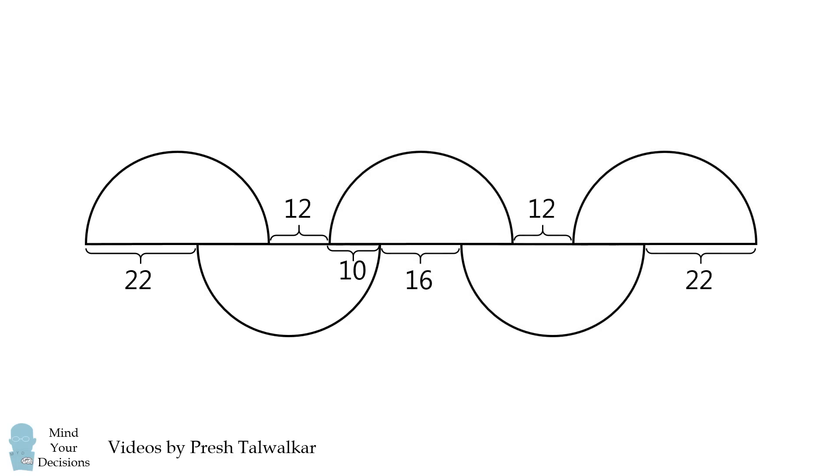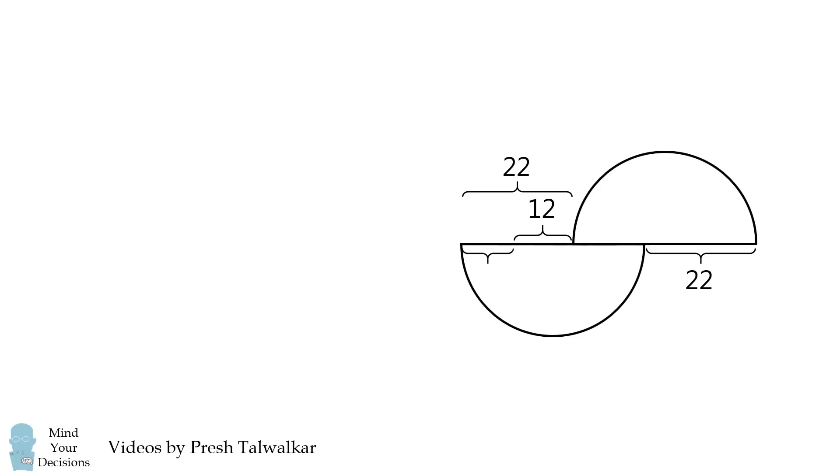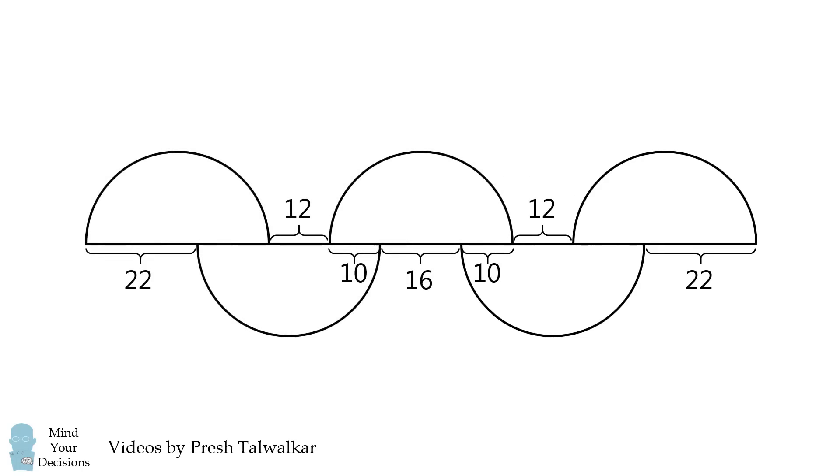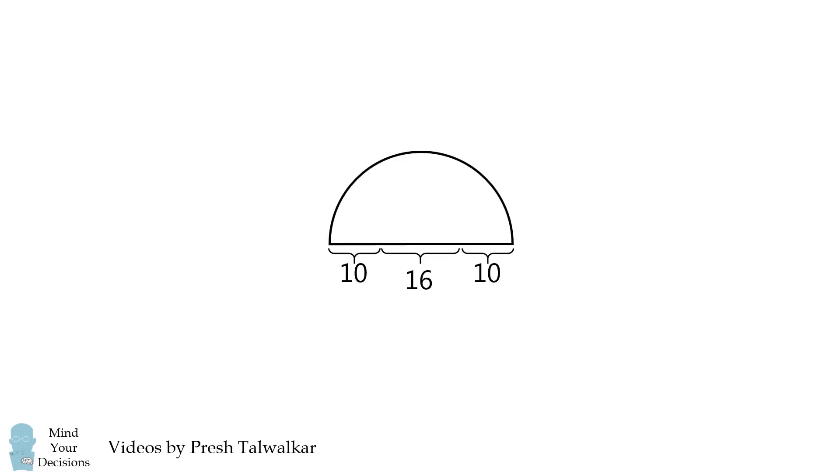The same thing goes for the other two semicircles on the other half of the diagram. We now go back to the original diagram and we focus on the central semicircle. We have 10 plus 16 plus 10 and that again gives us the diameter of 36.